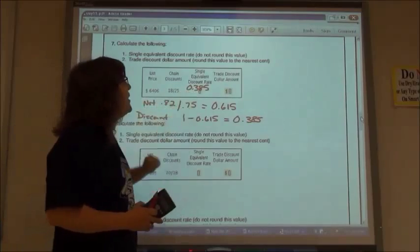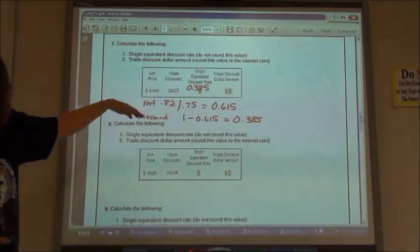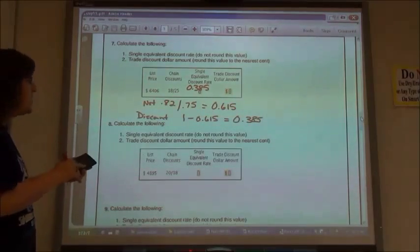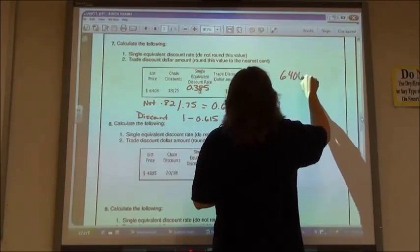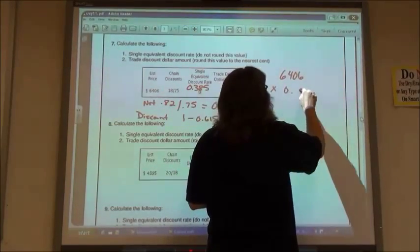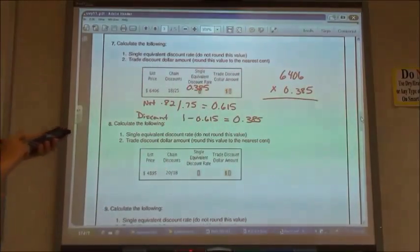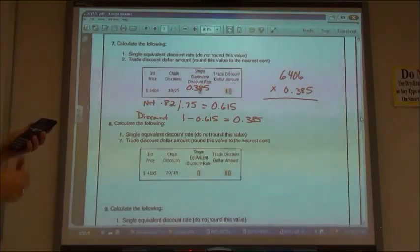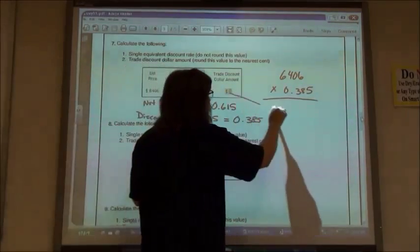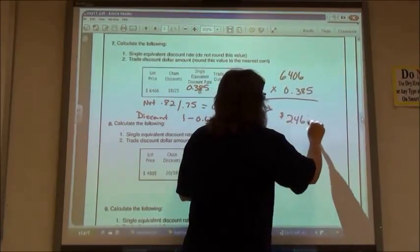But now we can find out what the discount is without having to multiply, subtract, multiply, subtract. So we're just going to go ahead and take our list price, $6,406 times 0.385. So $6,406 times 0.385 means that my discount amount is going to be $2,466.31.